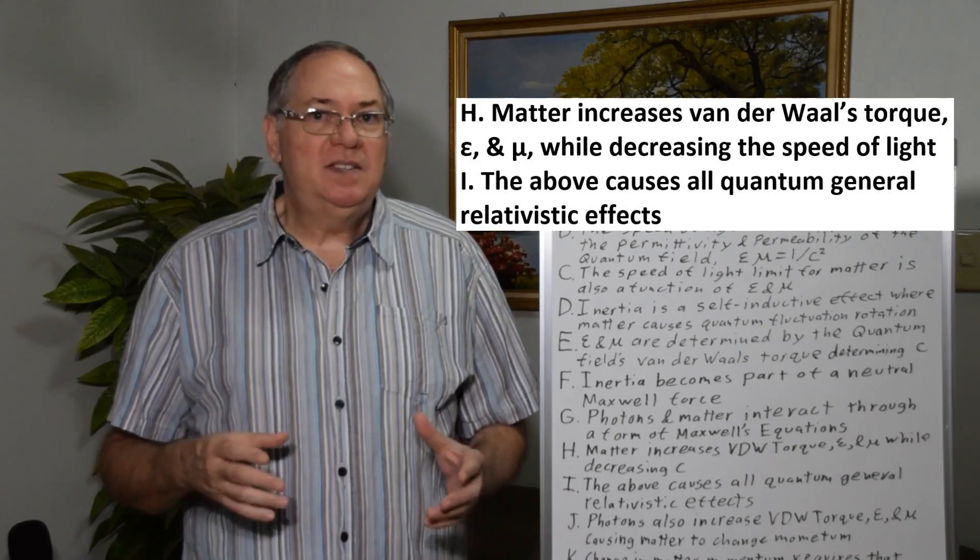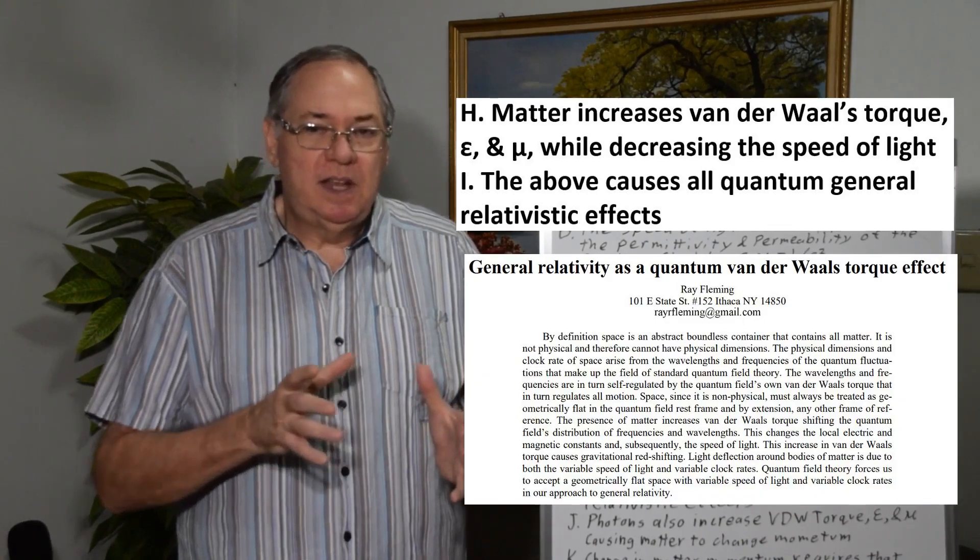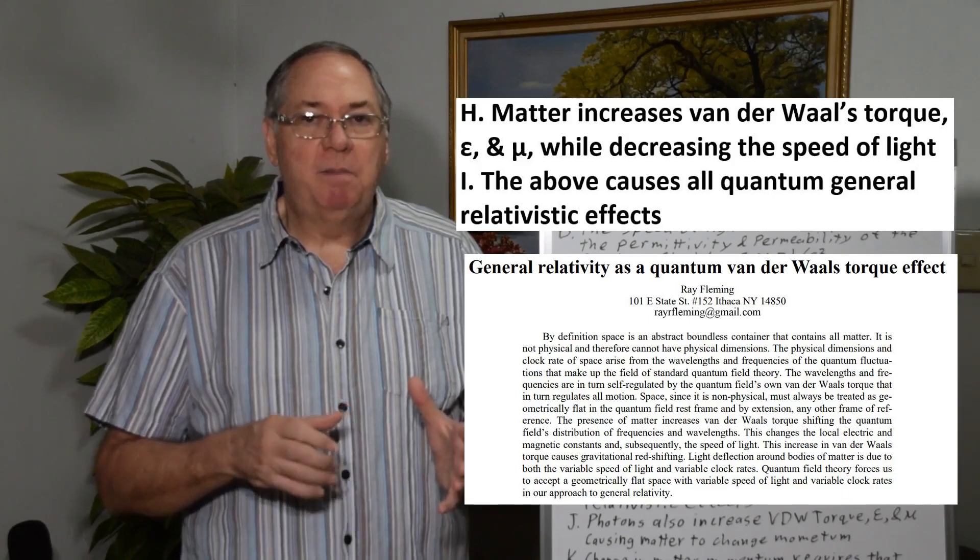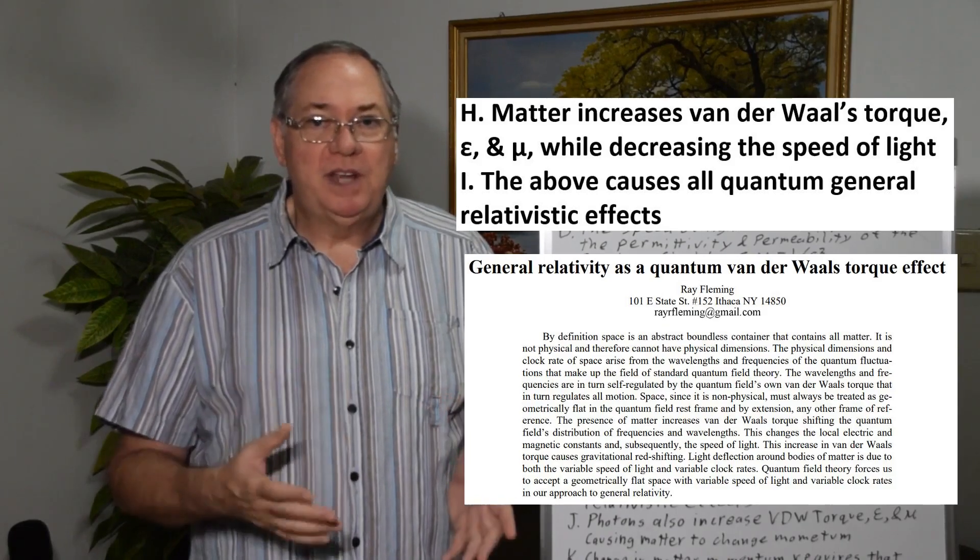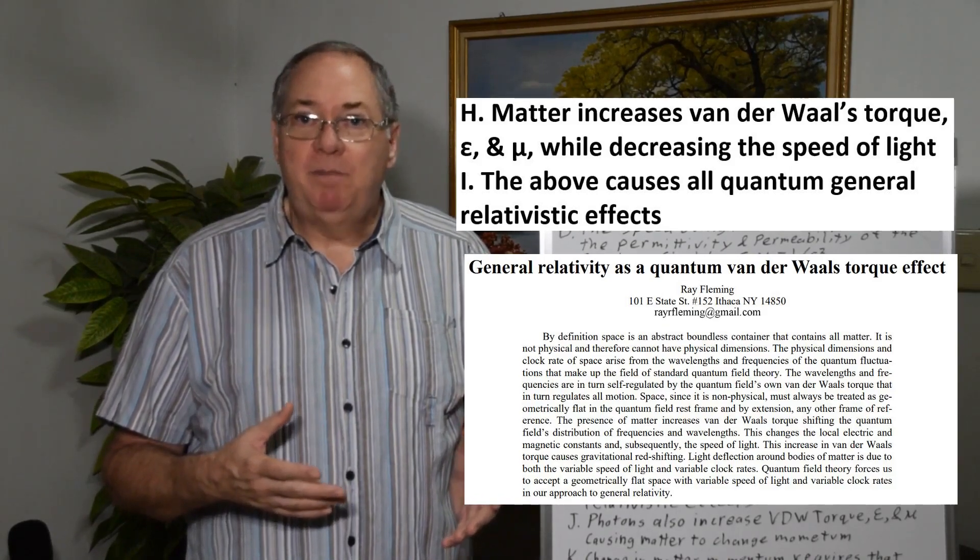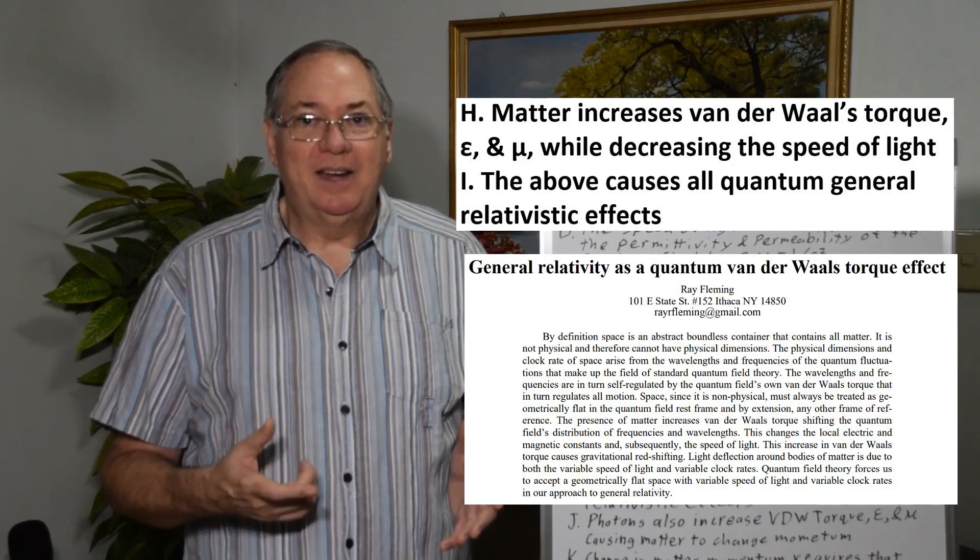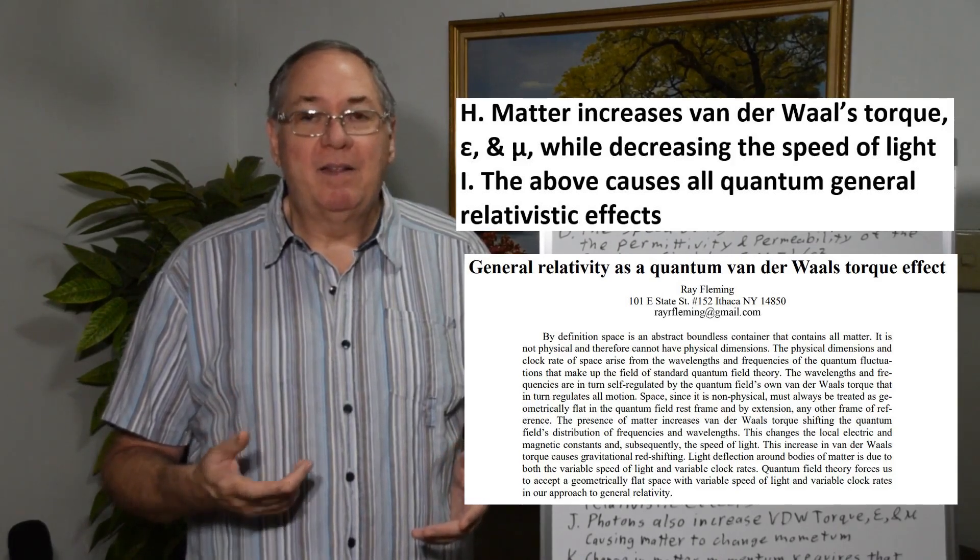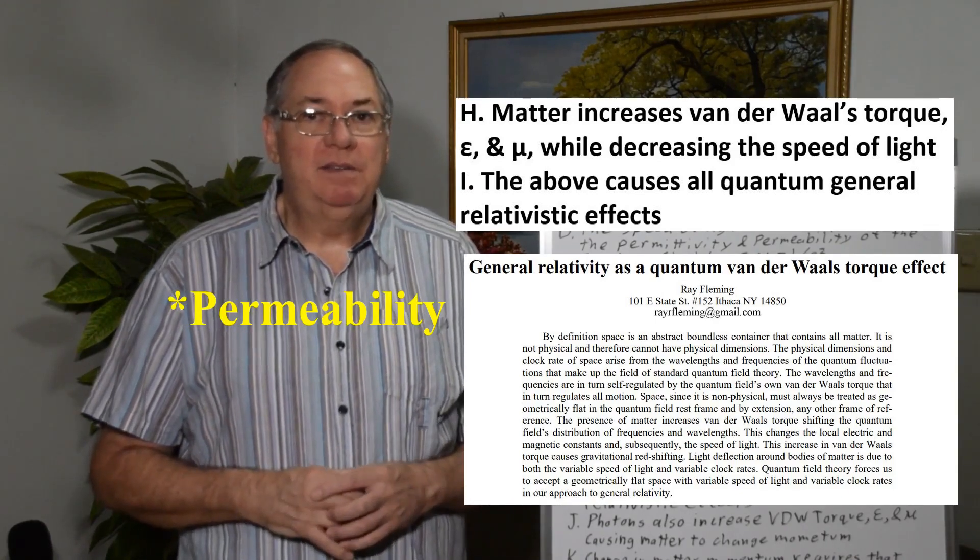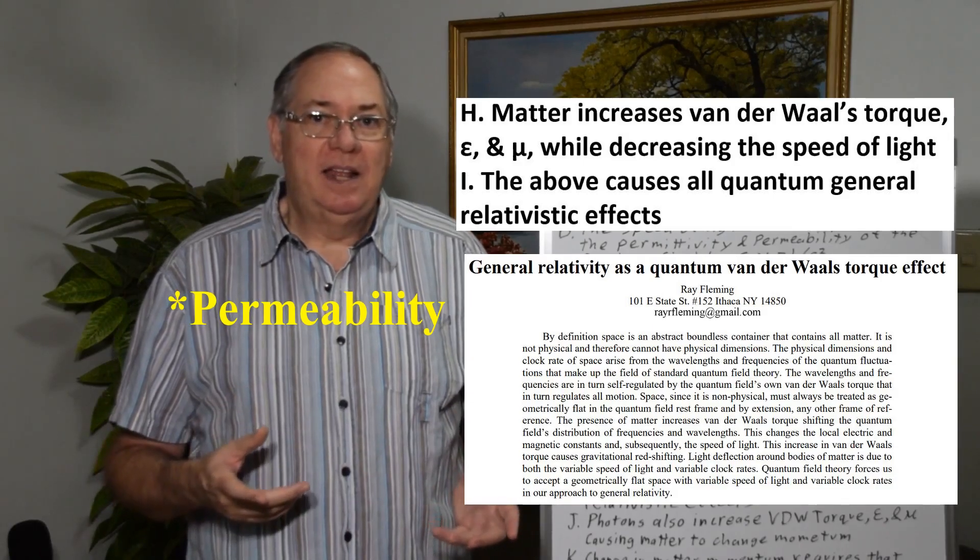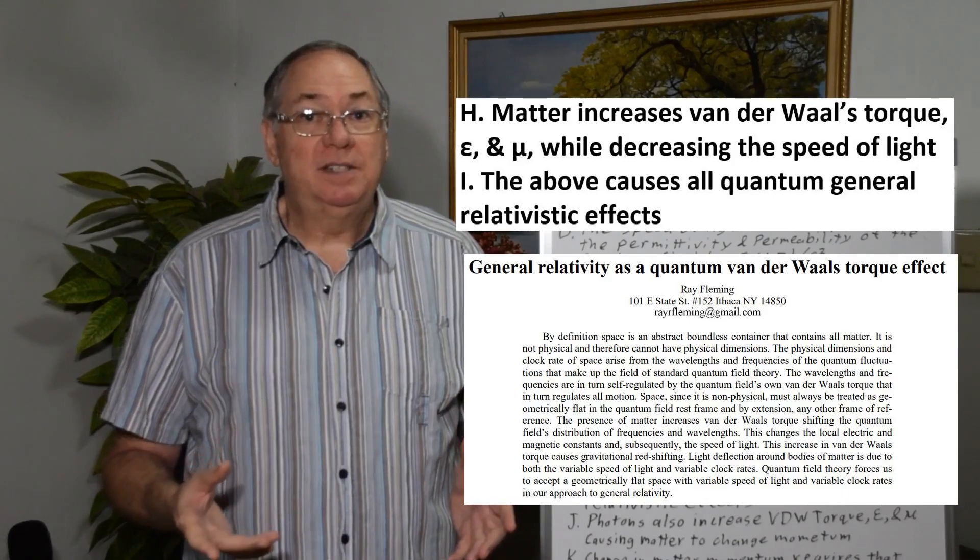And I think matter does that by increasing the Van der Waals torque. When a star exists, the Van der Waals torque near it increases, making rotation of quantum fluctuations harder. And by making the rotation of quantum fluctuations harder, it makes polarization harder, which changes the permittivity and makes it higher, and makes permeability harder. The flux of magnetic field is harder. And so that increases the permittivity. And by increasing the permittivity and permeability near matter, it decreases the speed of light.